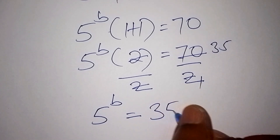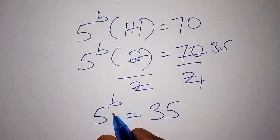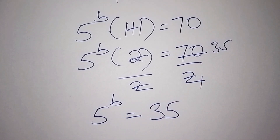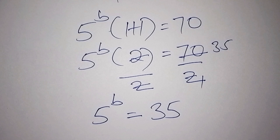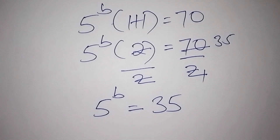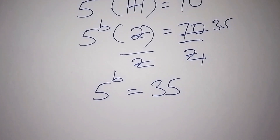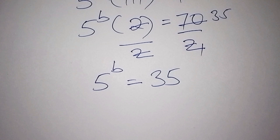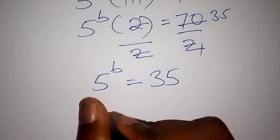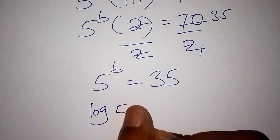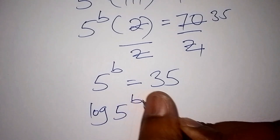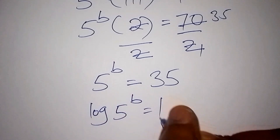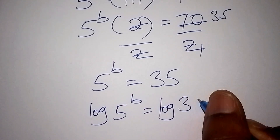So now we remain with 5 to the power of b is equals to 35. How do you solve the value for b? It's simple. We need to introduce something called the log. Let us now introduce the log from both sides, so we shall have the log of 5 to the power of b is equals to the log of 35.